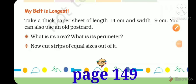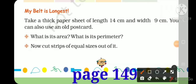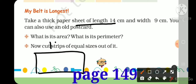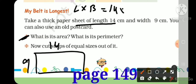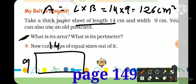Now let's write their answers. Next activity is 'My Belt is Longest.' Take a thick paper sheet of length 14 cm and width 9 cm — you can also use an old postcard which is 14 cm length and 9 cm width. The area formula is length × width, so 14 × 9 = 126 cm².